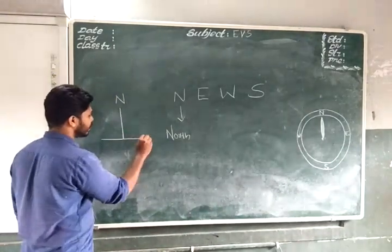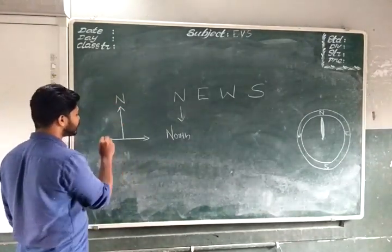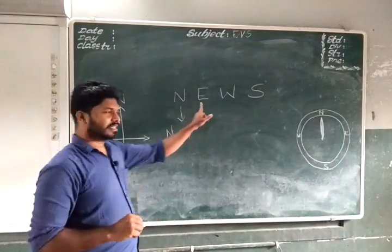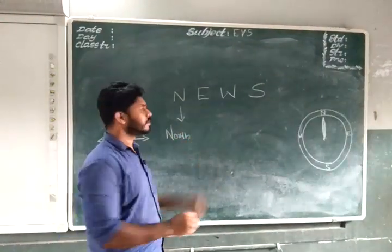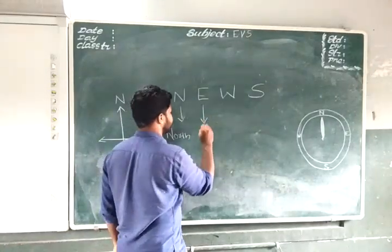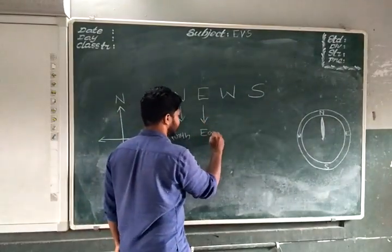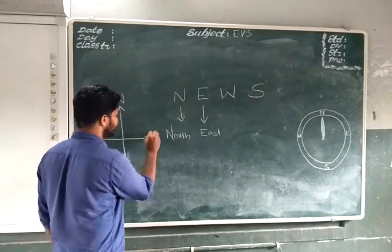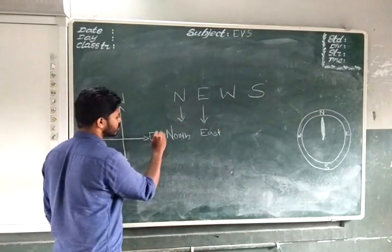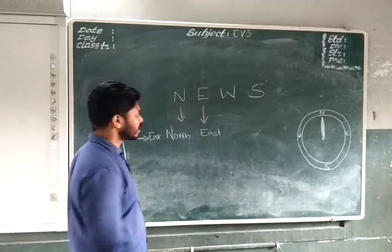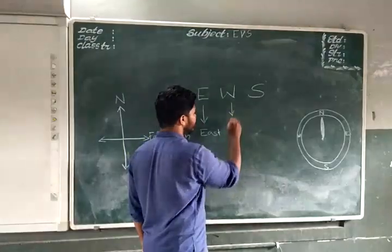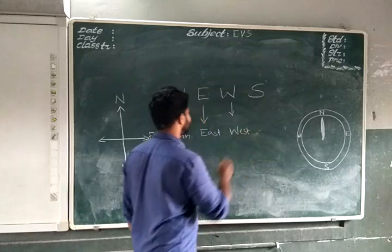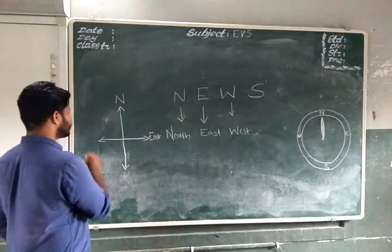Let us write it with an arrow tip. E is for East. East is on your right side — this is your right, so East is here. Next one, W is for West. West is on your left.